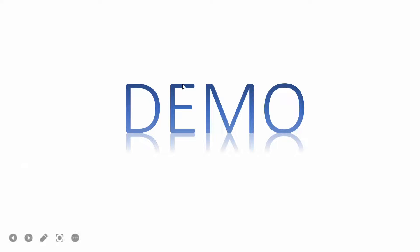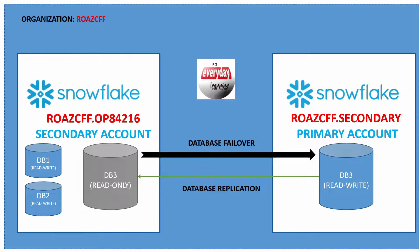Let me show you a diagram before we proceed. This diagram illustrates what we mean by failover and failback. One part is the primary account — you can see the organization name dot account name — and this is the secondary account. The moment I do the failover, the secondary account becomes the primary account, as shown by the arrow direction. The original primary account becomes the secondary and its database becomes read-only (shown grayed out), while the previously secondary account becomes primary with read-write access and replication now flows from that database to the original.